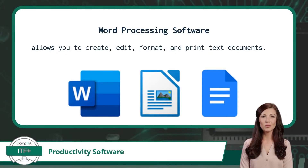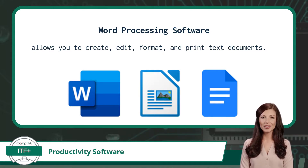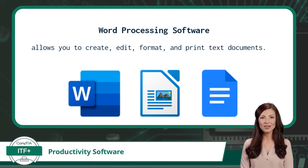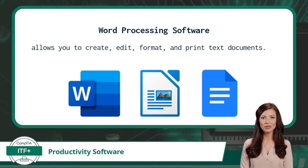First, we will look into Word Processing Software, which allows you to create, edit, format, and print text documents. It's like a digital typewriter with a whole lot of powerful features. Three popular examples of Word Processing Software would include Microsoft Word, LibreOffice, and Google Docs.